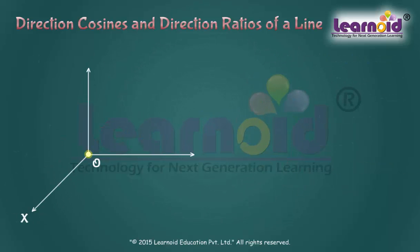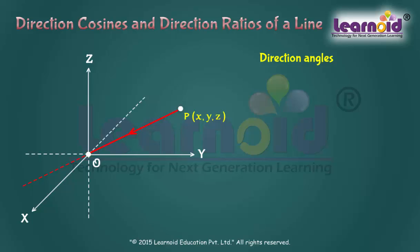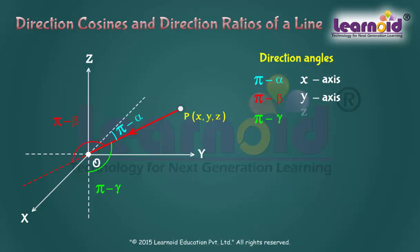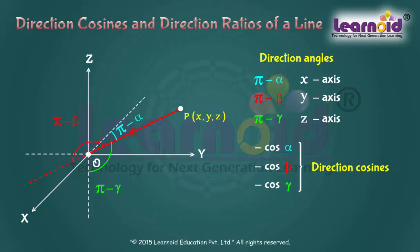If the direction of the line is reversed, the direction angles are replaced by their supplement angles, i.e., Pi minus Alpha, Pi minus Beta and Pi minus Gamma. The cosines of the Direction Cosines are reversed, i.e., minus Cos Alpha, minus Cos Beta, minus Cos Gamma. It means a given line can be extended in two opposite directions in space, so it has two sets of Direction Cosines.